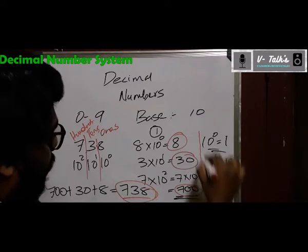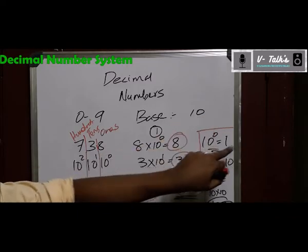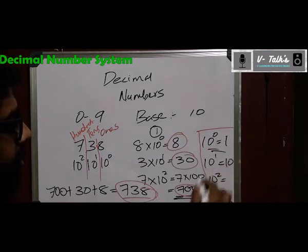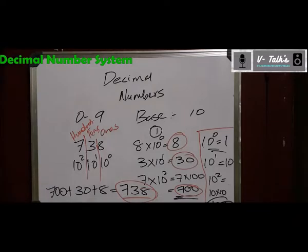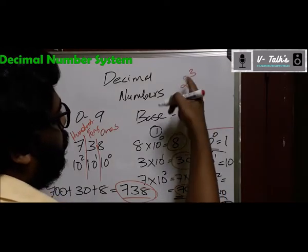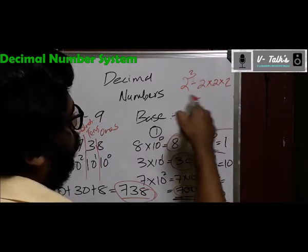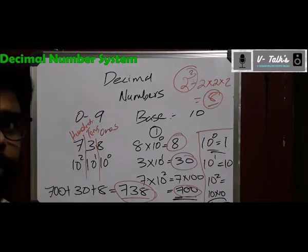As an extra note on exponents: any number raised to 0 is 1. 10 raised to 1 is 10. 10 raised to 2 means 10 times 10, which is 100. For example, 2 raised to 3 means 2 into 2 into 2 — three times 2 — which is 4 into 2 equals 8. So 2 raised to 3 is 8. This is how exponents work for any number. And that is the decimal number system.